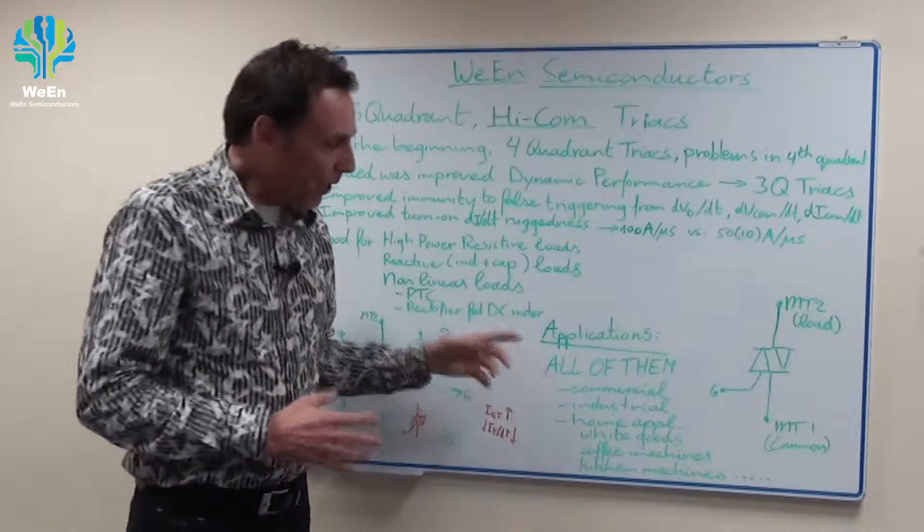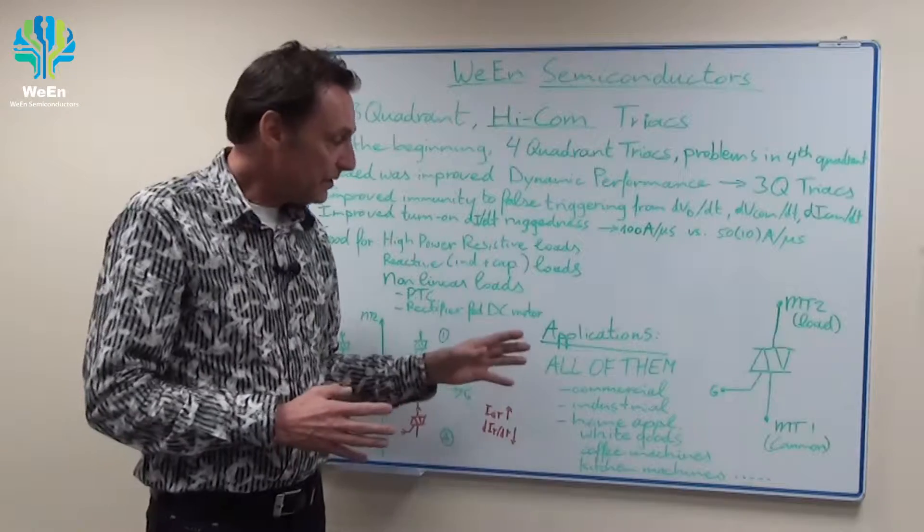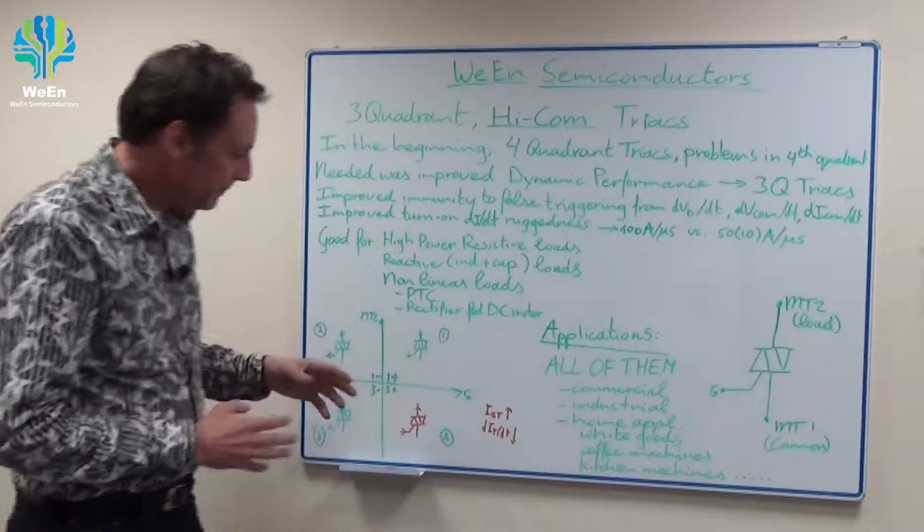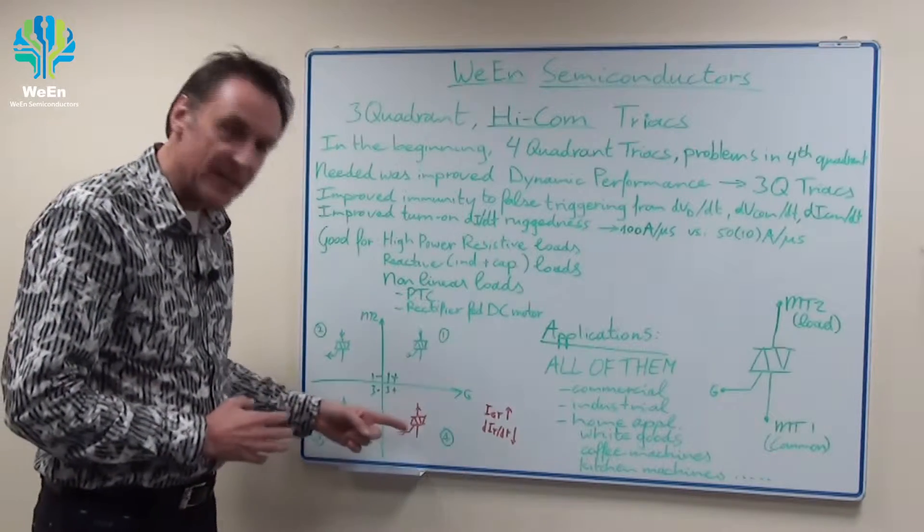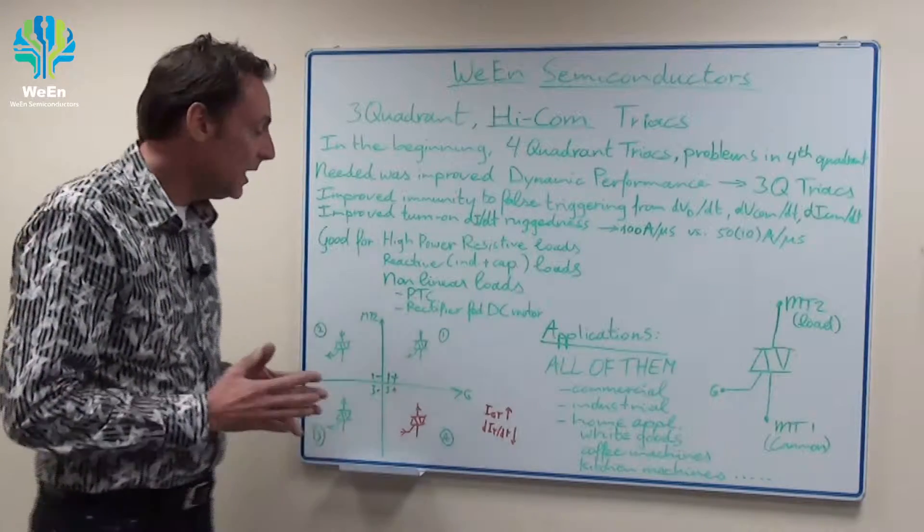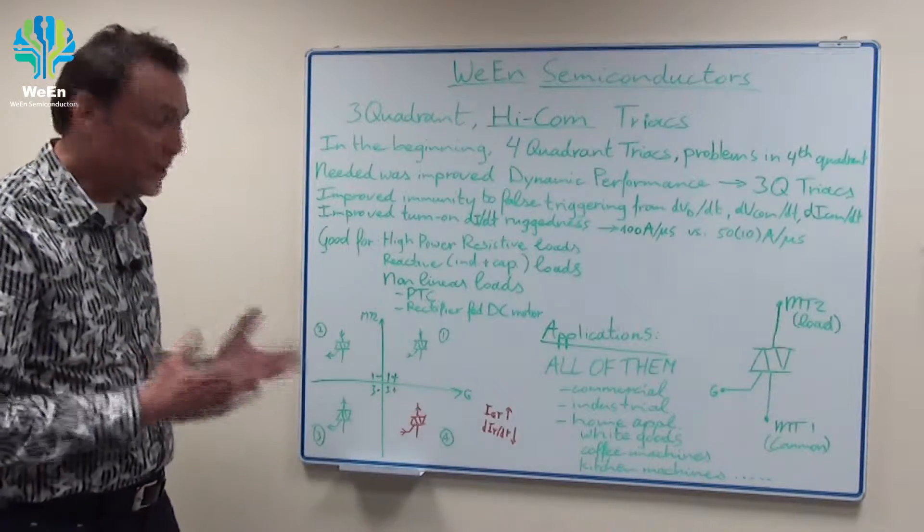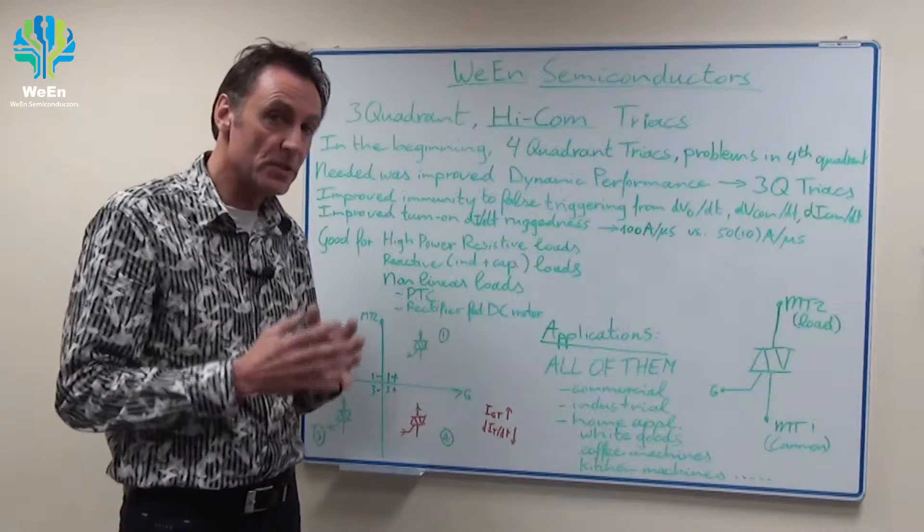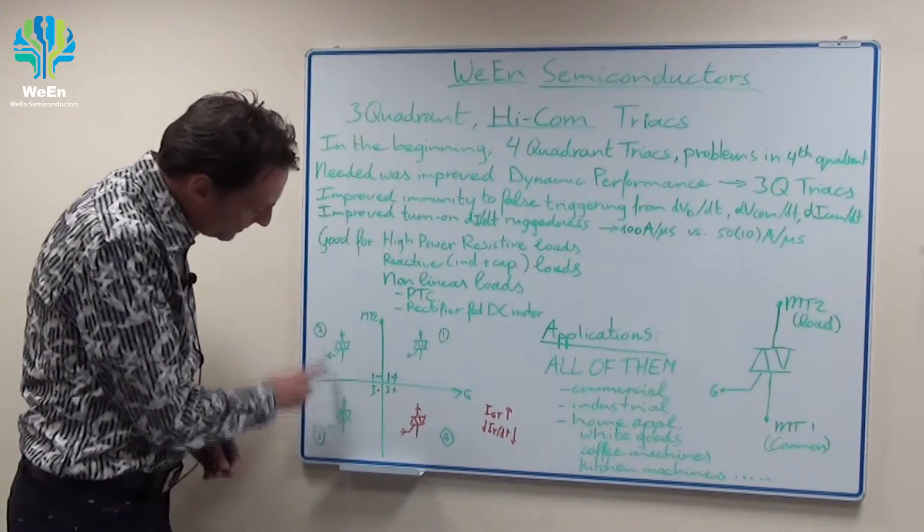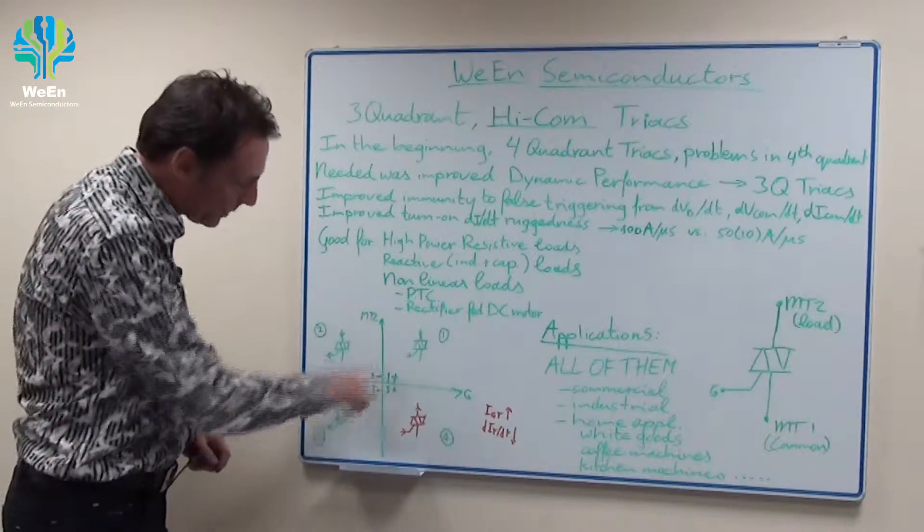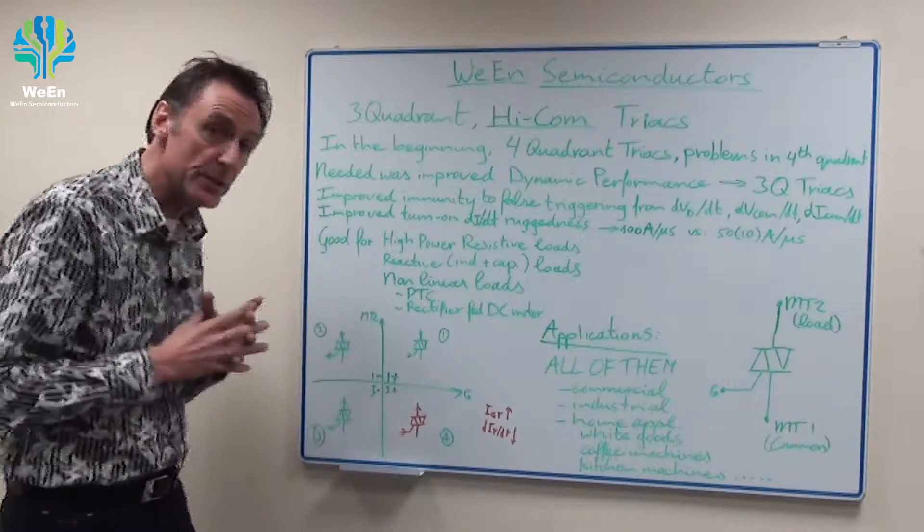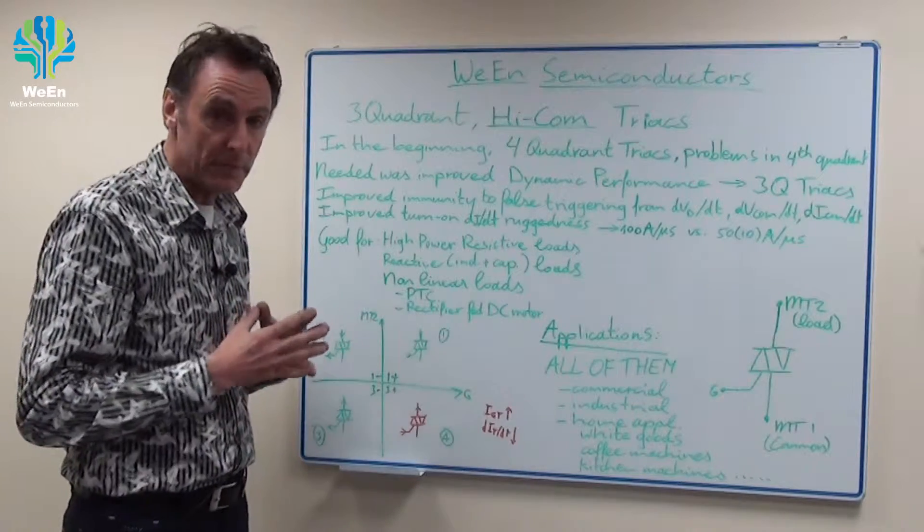In virtually all triac applications the three quadrant triac should be the first choice. Only if you can only apply positive gate current then you have no choice, then you have to use a four quadrant triac. But we always recommend try to use negative gate current. Use the triac in the left two quadrants with negative gate current only or in these two quadrants with positive and negative gate current. Then you can use a three quadrant triac and you will have all the benefits.